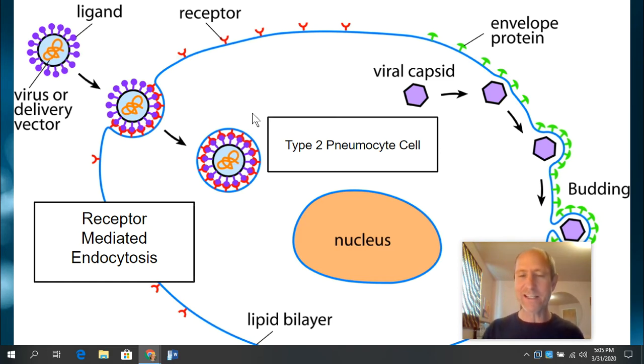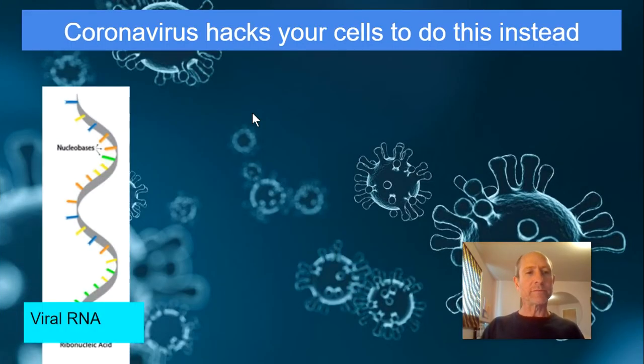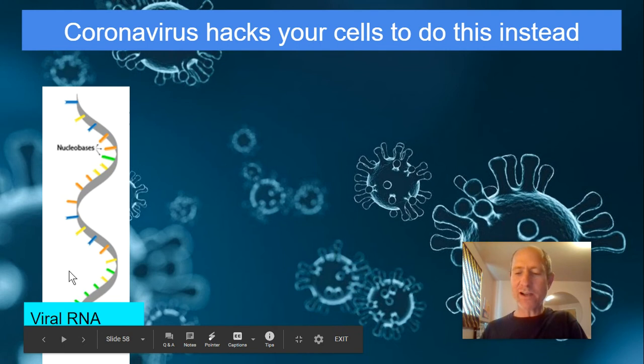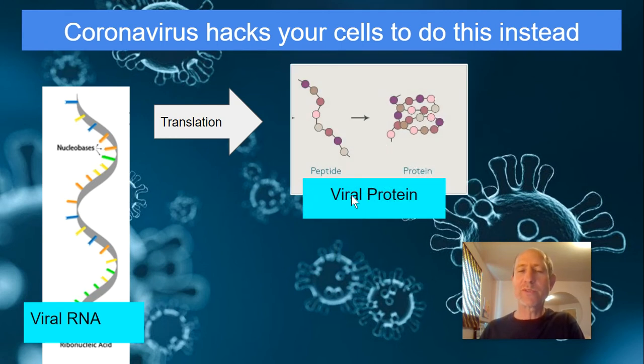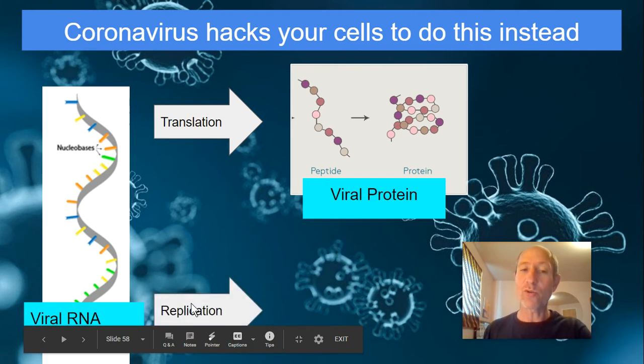So anyway, that viral particle gets in there and then what happens? It hacks cells to do this. It injects its RNA into the cell and then that RNA, two things happen to it, one of which is translation at a ribosome and viral proteins are produced. So the spike protein, and I think there's nine other proteins, 11 other proteins. So some of those proteins can glom together and form an enzyme called a replication complex. And that replication complex, which is not native to our cells, that replication complex can take this viral RNA and replicate it.